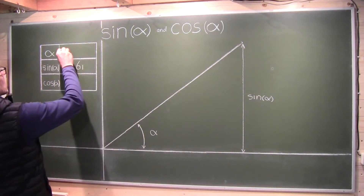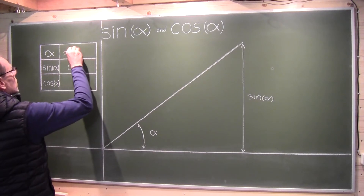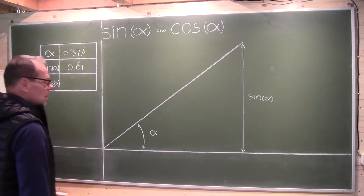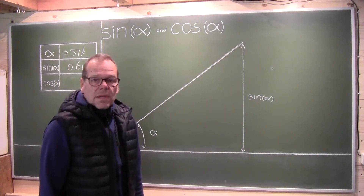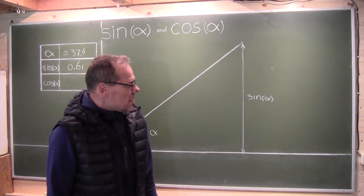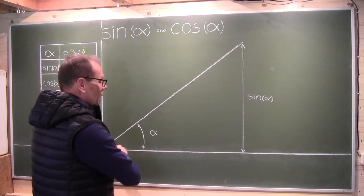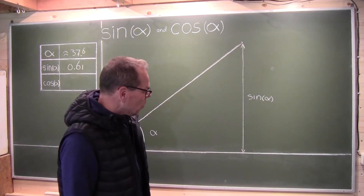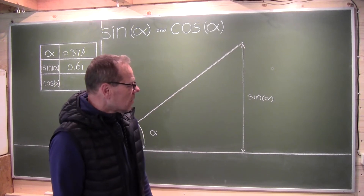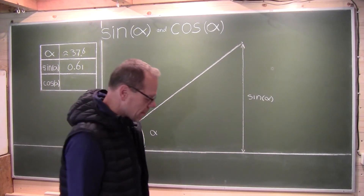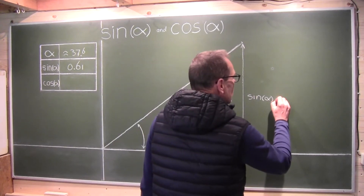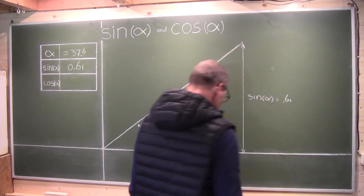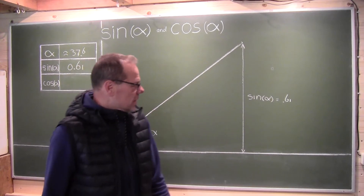It's approximately 37.6 degrees. Mind you, you can only do this if you're using a line of exactly one meter in length, or one unit in length. You could do it as long as you keep the units the same — and if it's 0.61, then this will always work.